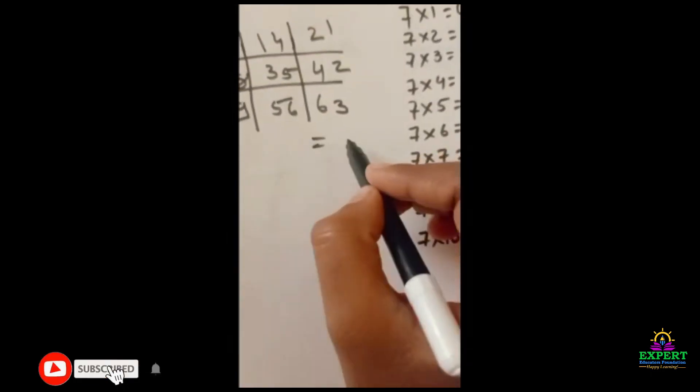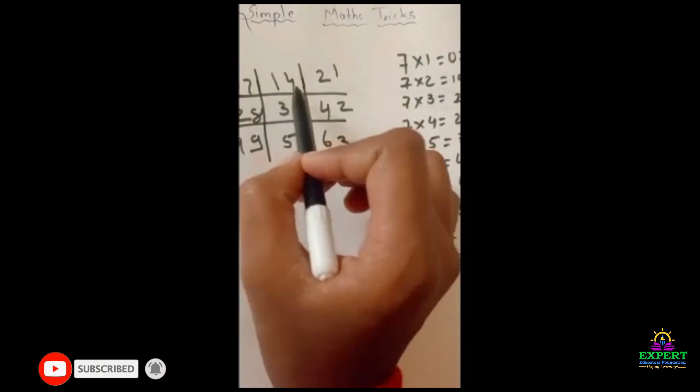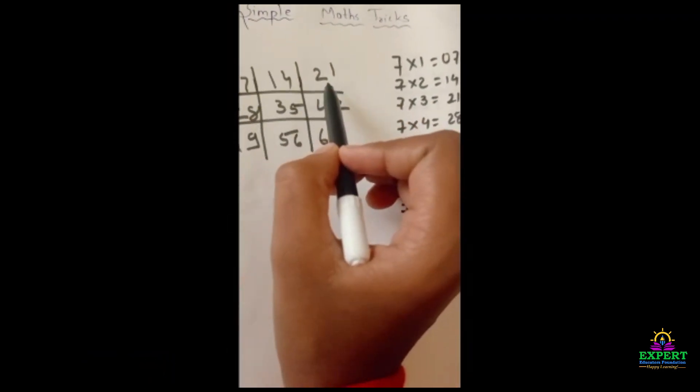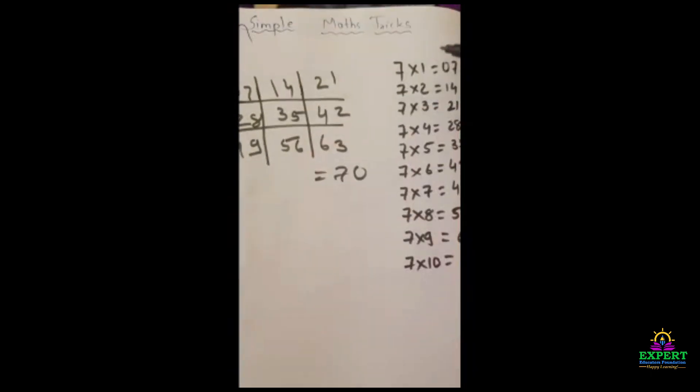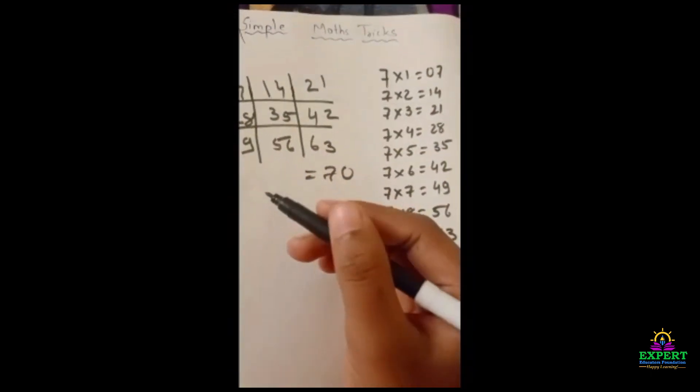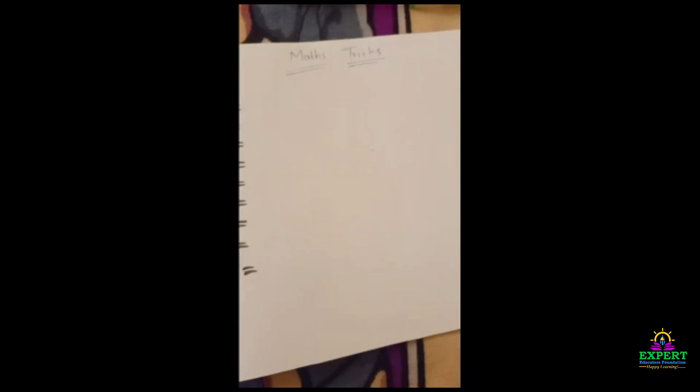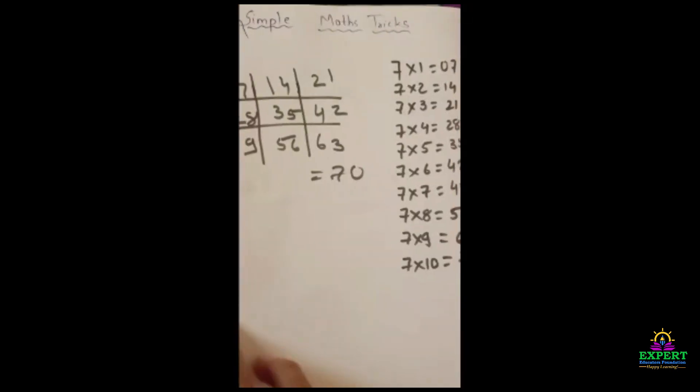Now you will see here, 7 times 1 is 7, 7 times 2 is 14, 7 times 3 is 21. You can check from here. See, now this was our second trick. Now third, our third problem.